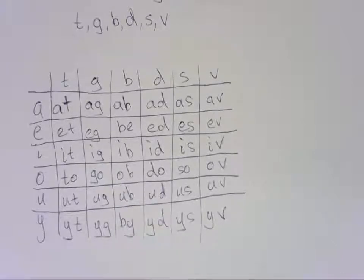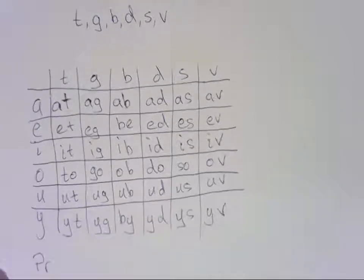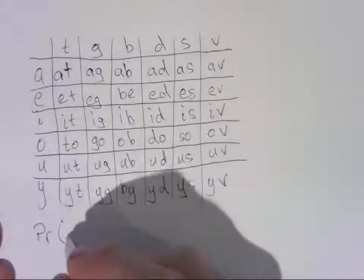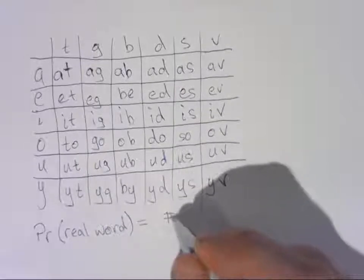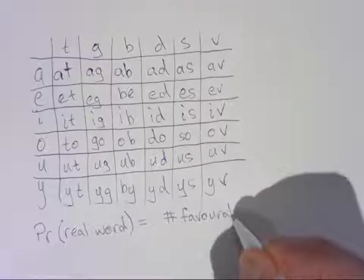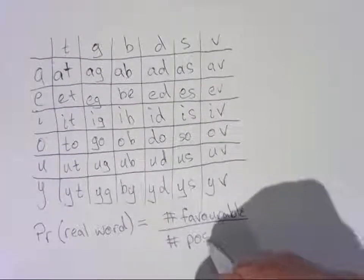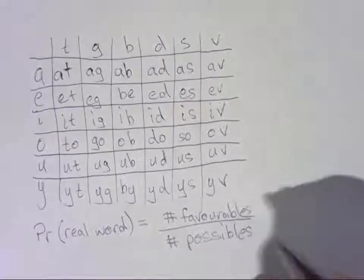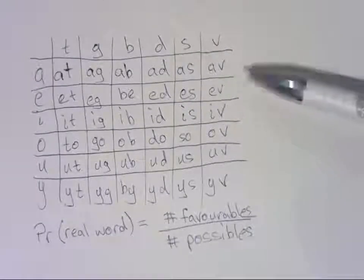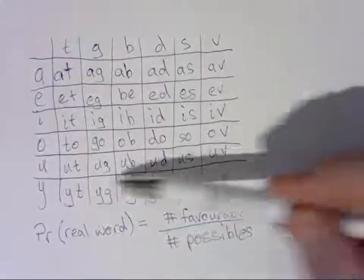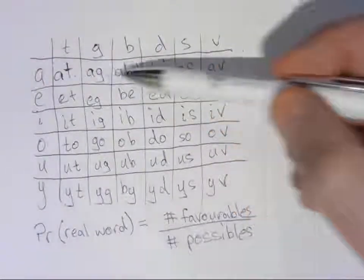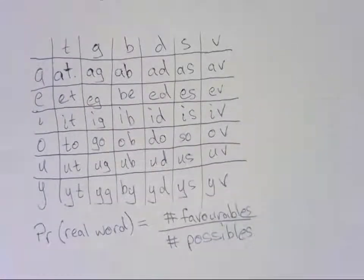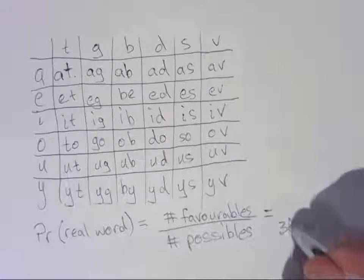Now, thinking that we want to figure out what the probability of getting an actual word is, what I might do now is think about the formula for probability. So the formula for probability, of course, is that the probability of whatever it is we're interested in, let's say a real word, that's going to be equal to the number of favorable outcomes divided by the number of possible outcomes. Now, in our dice situation, the number of possible outcomes is basically just the number of cells in this table. So we have 6, 12, 18, 24, 30, 36, 6 times 6, of course. So the number of possible outcomes is 36.